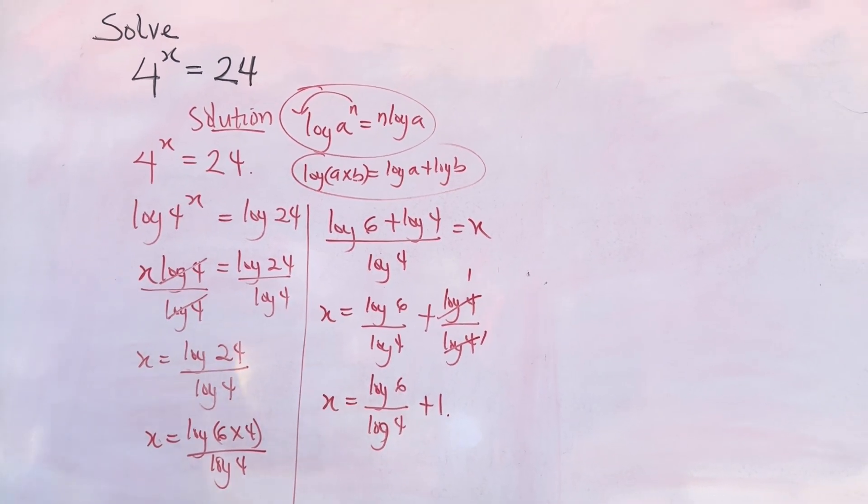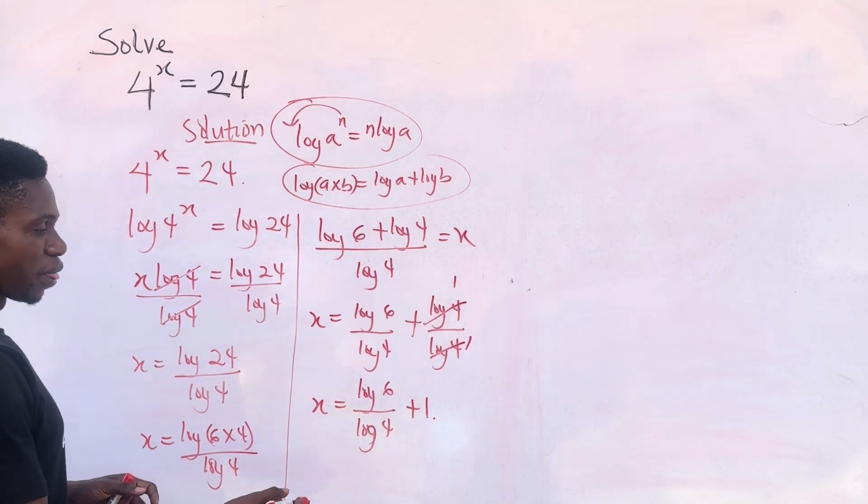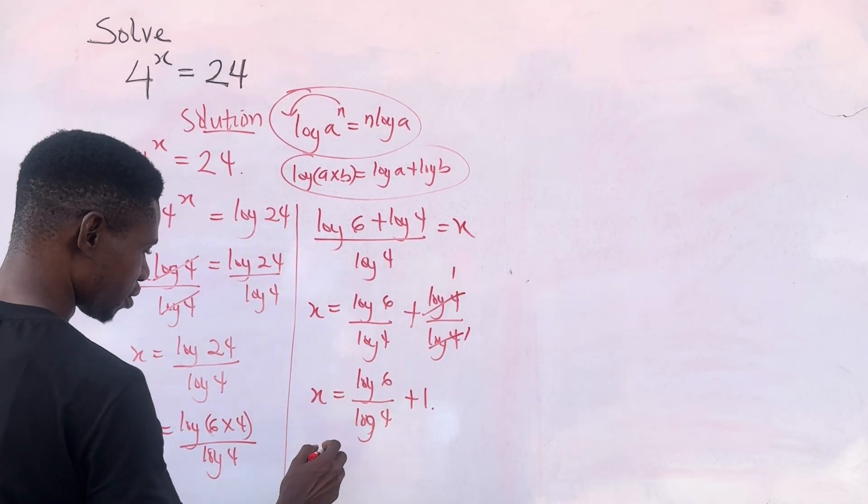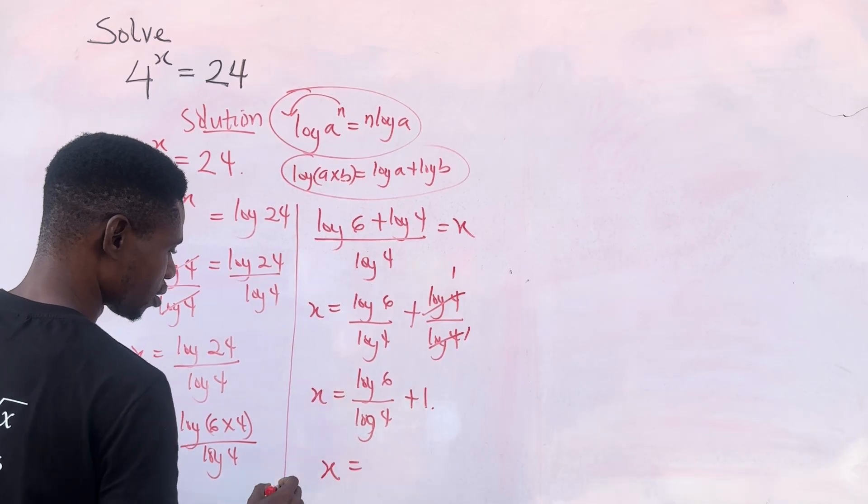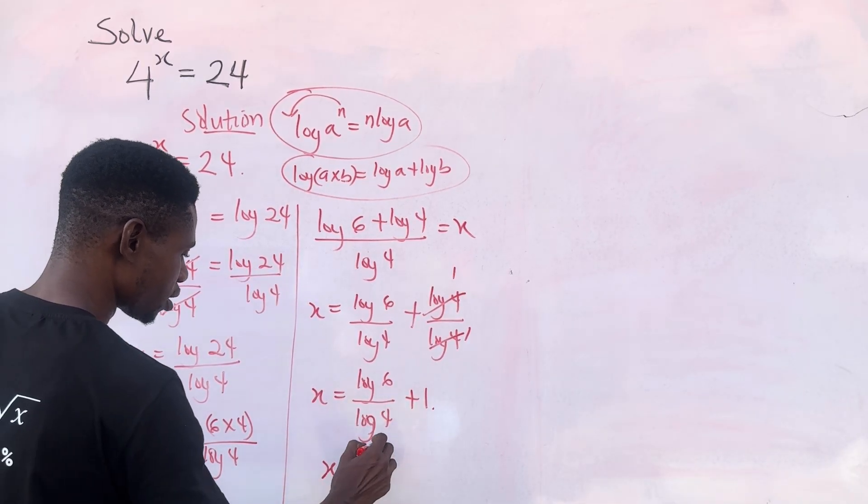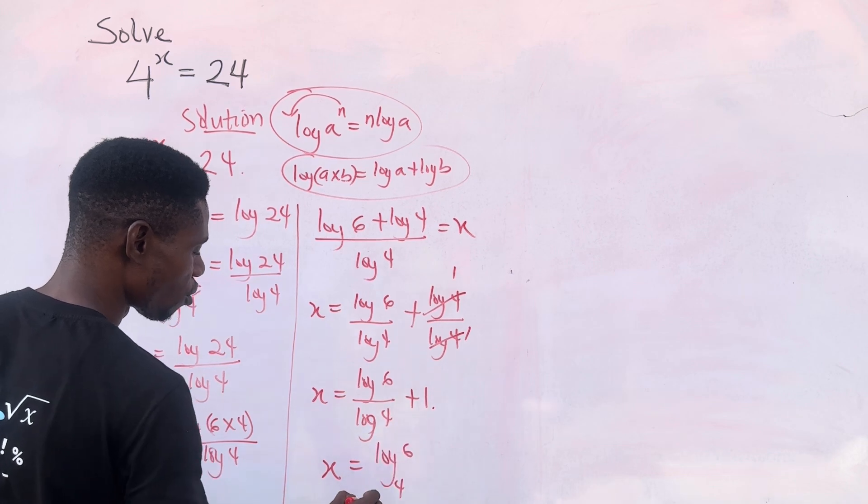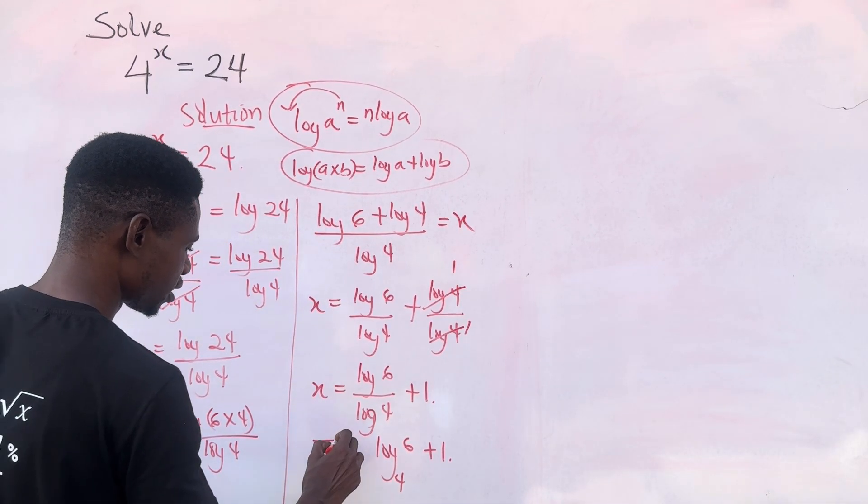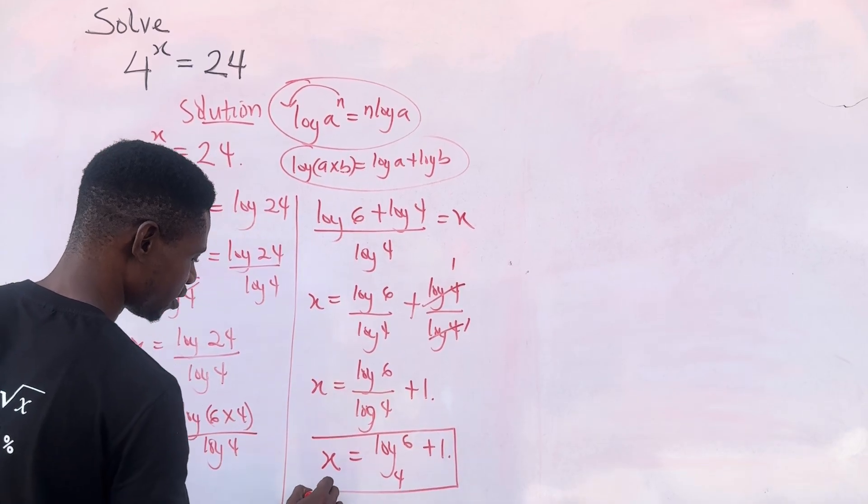And now, can I continue down here? Now if you remember our change of base in logarithms, x can be written as log 6 base 4 plus 1. And this is our answer.